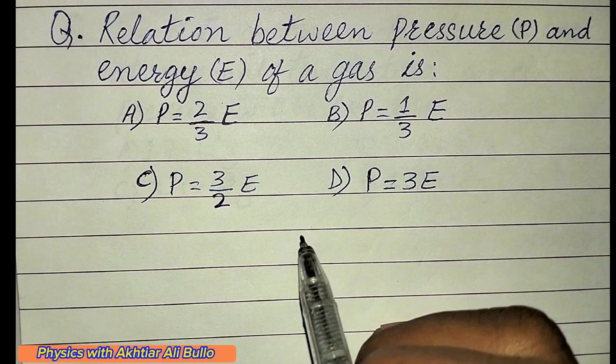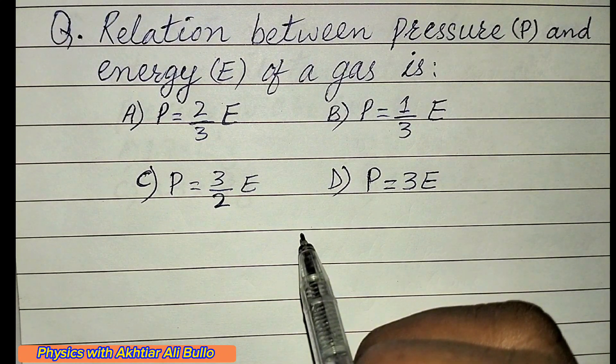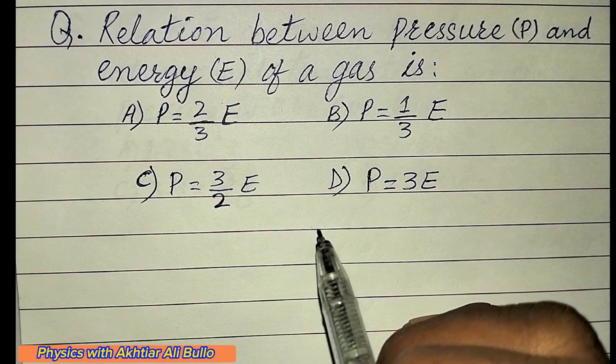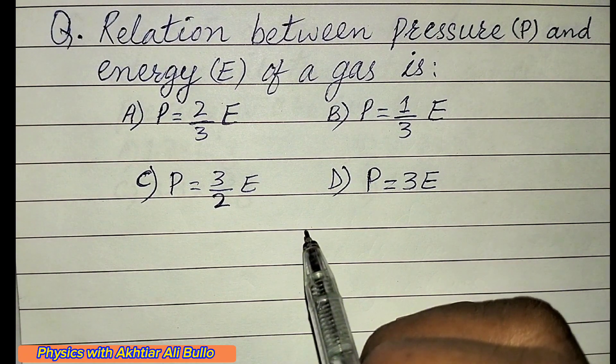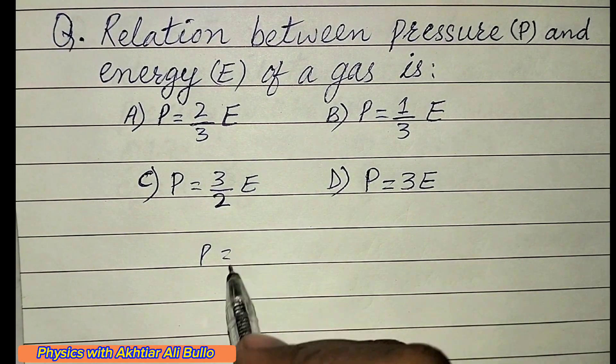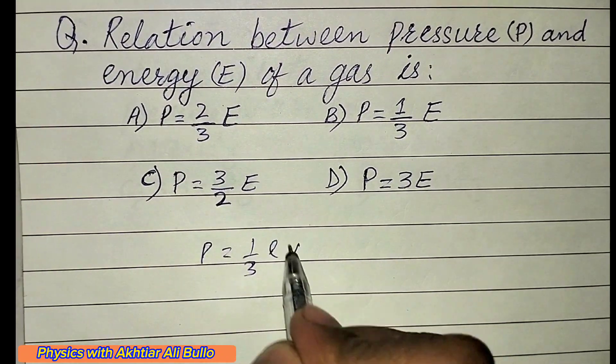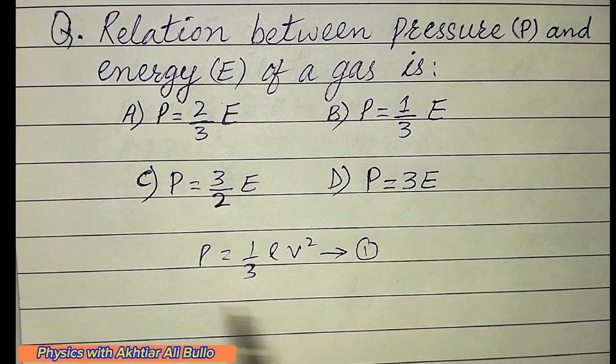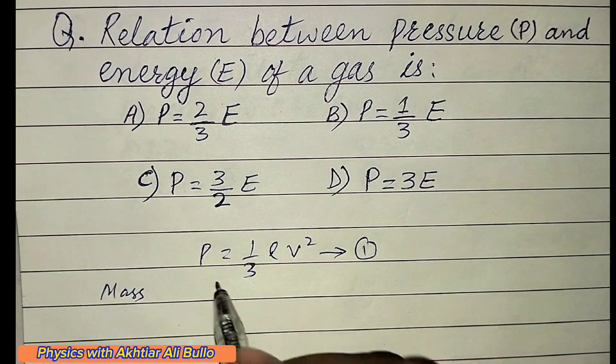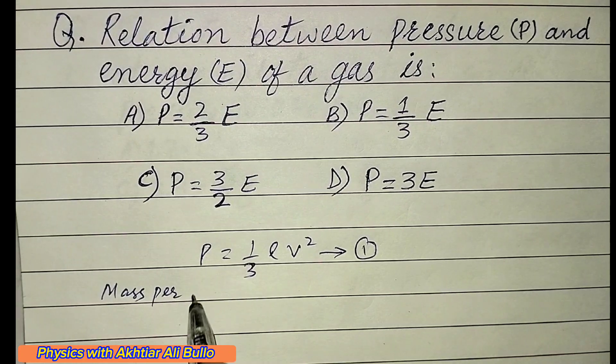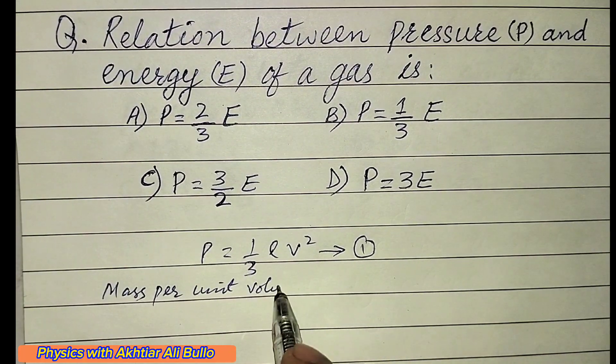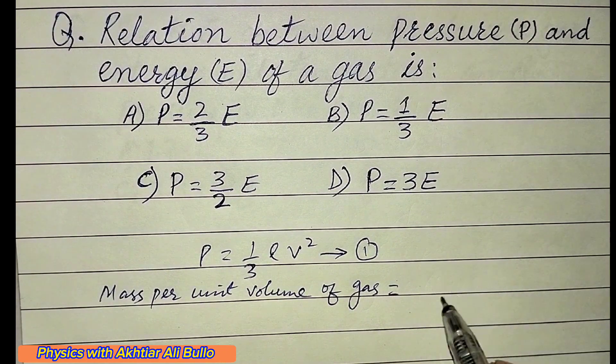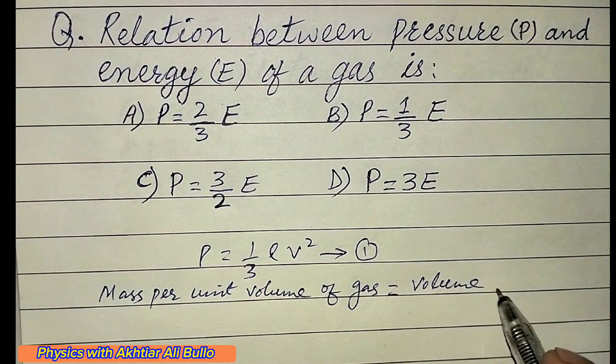According to kinetic molecular theory of gases, the pressure exerted by a gas of density ρ and root mean square speed v is given by P = (1/3)ρv². This is equation 1. Here, ρ is mass per unit volume of the gas.